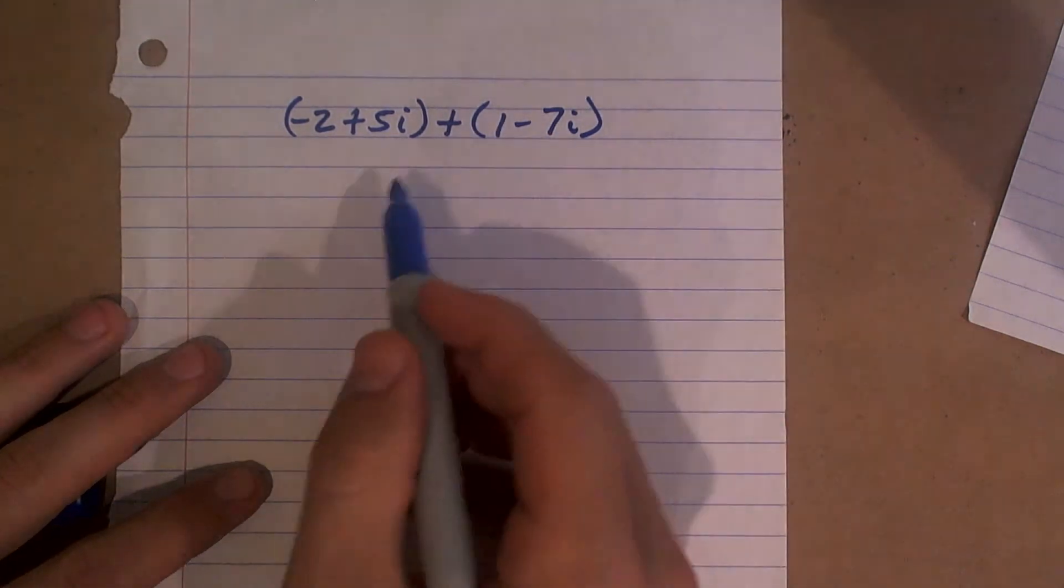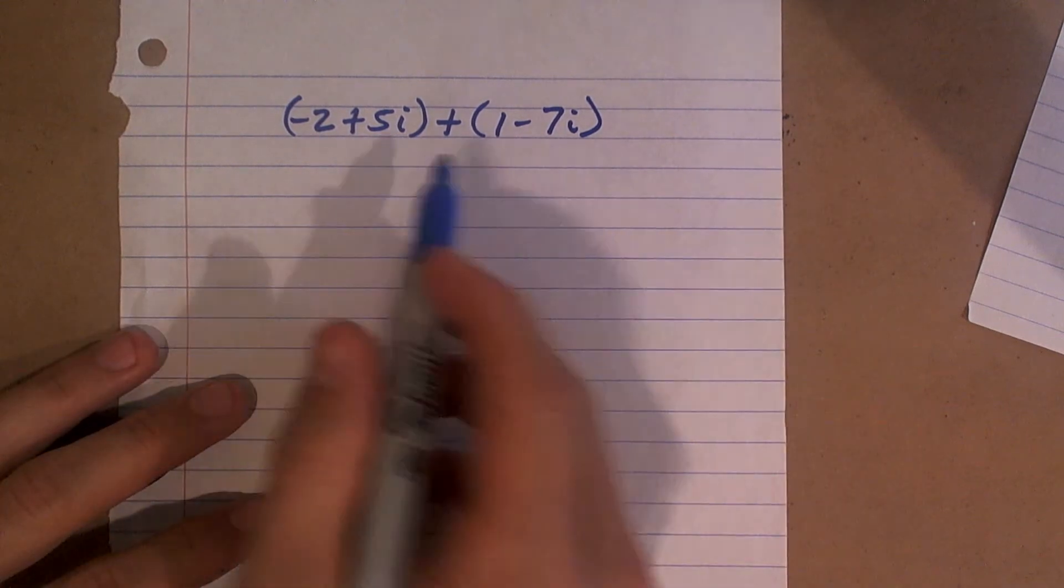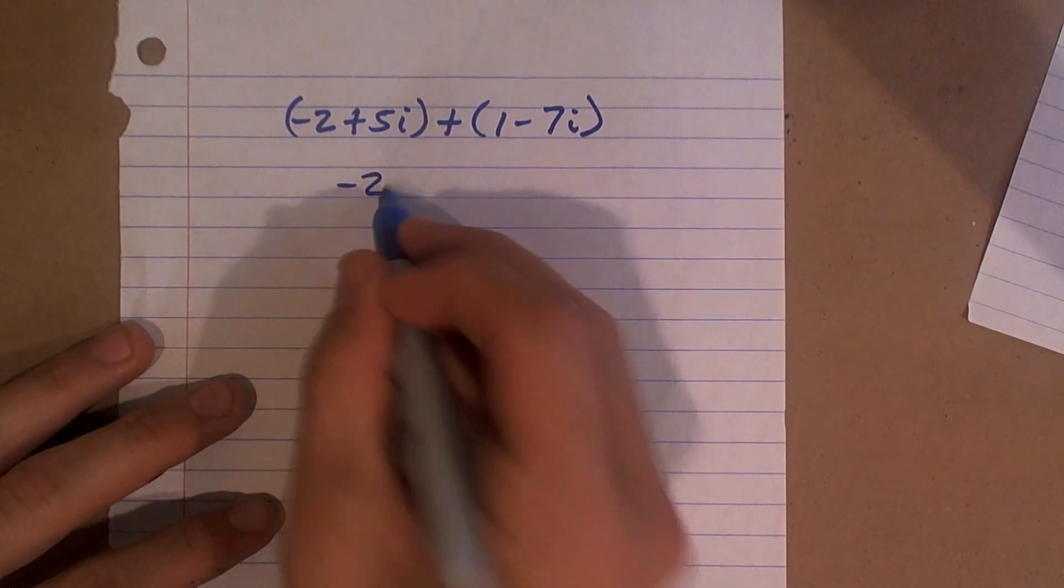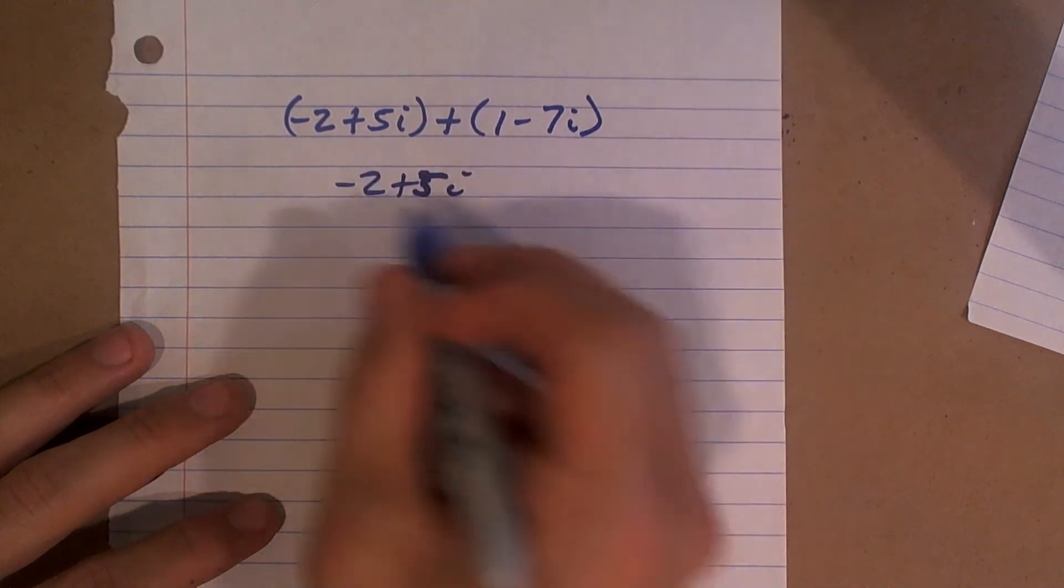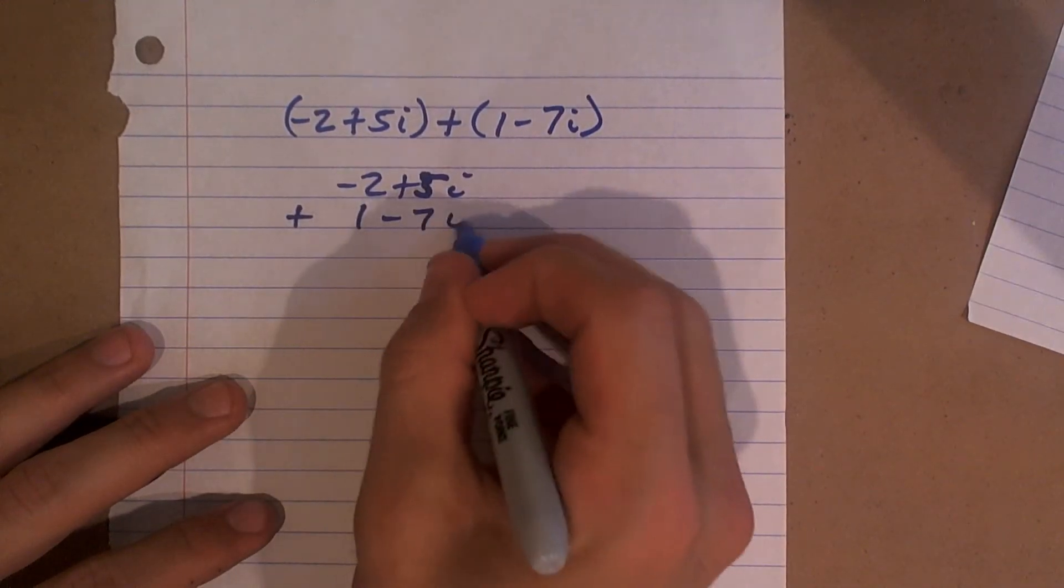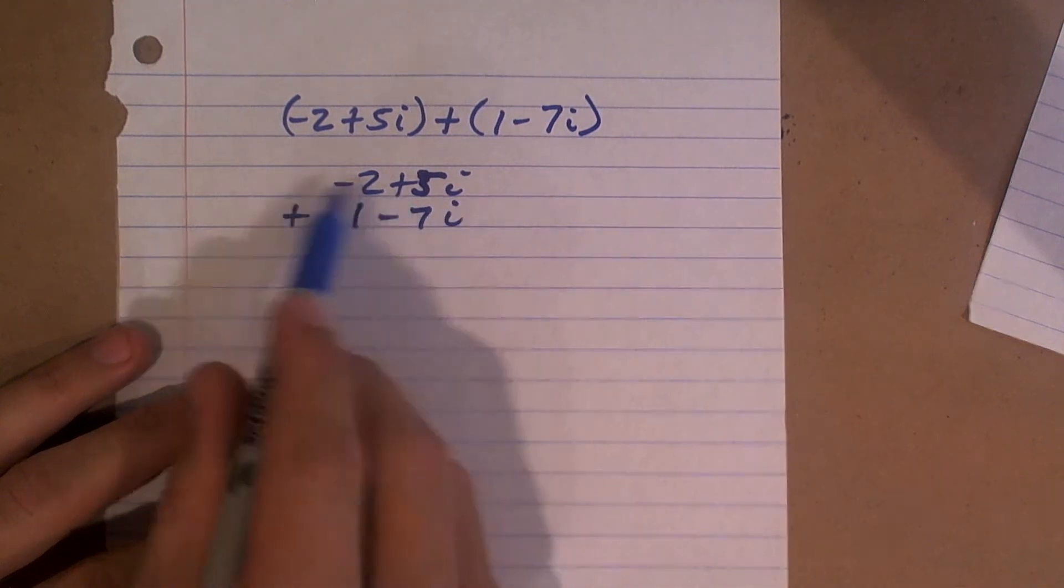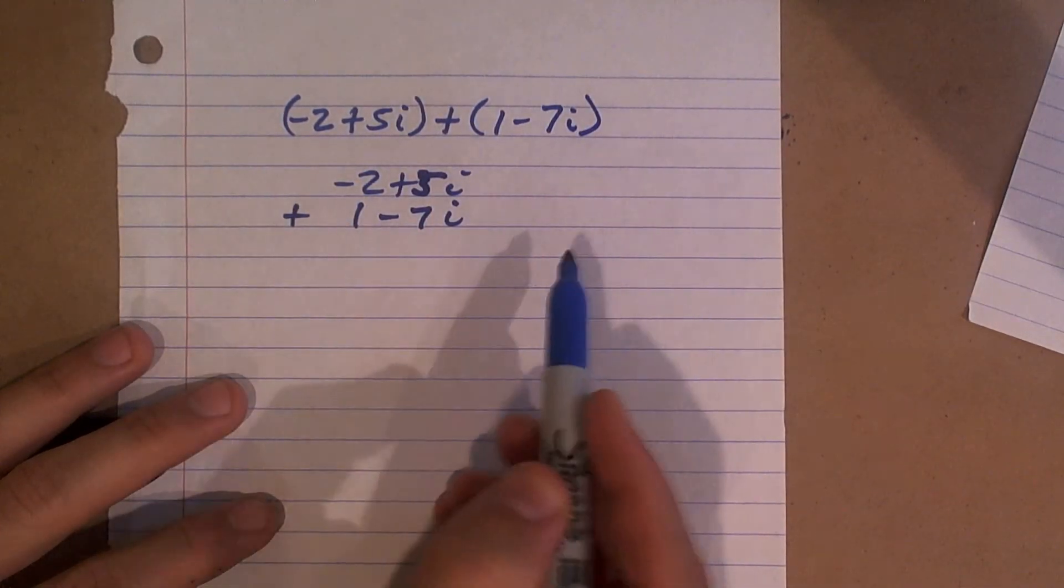So what I like to do for this, just so I make sure there's no confusion, I'm going to write these in a vertical method. Plus 1 minus 7i. So what I did is I took both of these and added them up vertically.